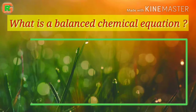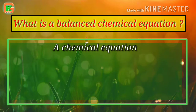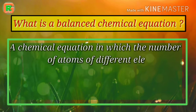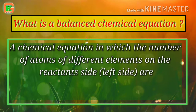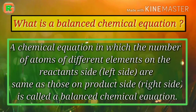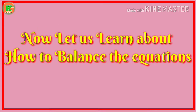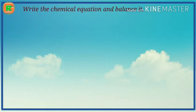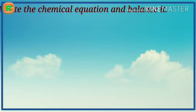What is a balanced chemical equation? A chemical equation in which the number of atoms of different elements on the reactants side (left side) are the same as those on the product side (right side) is called a balanced chemical equation. Now let us learn about how to balance equations.